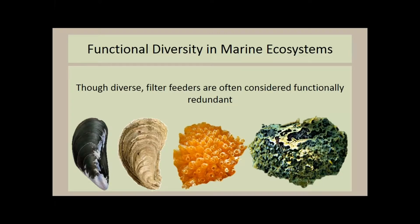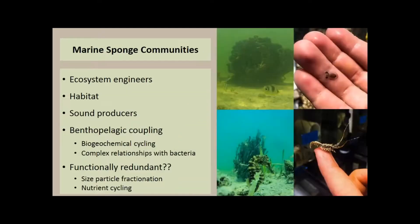It's traditionally thought that while sponges or filter feeders in general are diverse, there's many different species, they're filter feeders so they're all considered functionally redundant. But the question is, is this true for sponges? Does it follow that rule?